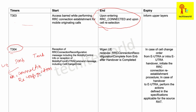In the handover procedure, the UE sends a measurement report to the source eNodeB, which then sends a Handover Request to the target eNodeB. The target replies with a Handover Acknowledgement, after which the source eNodeB sends the UE an RRC Connection Reconfiguration message. When the UE receives this reconfiguration message — which also contains mobility control information and cell change order information — T304 starts.